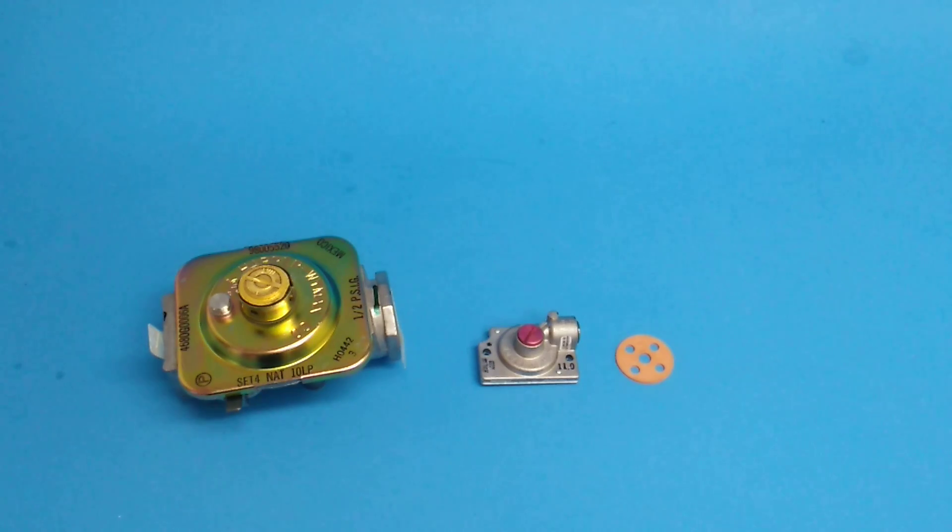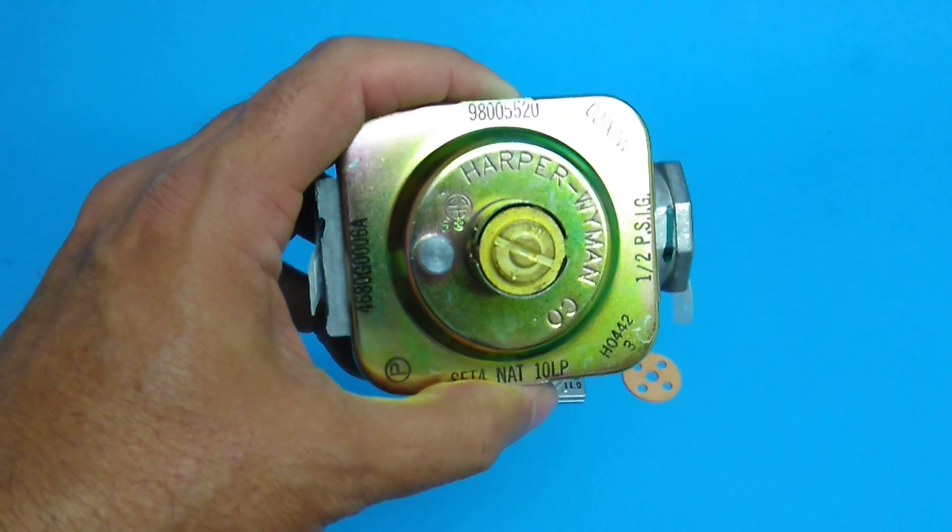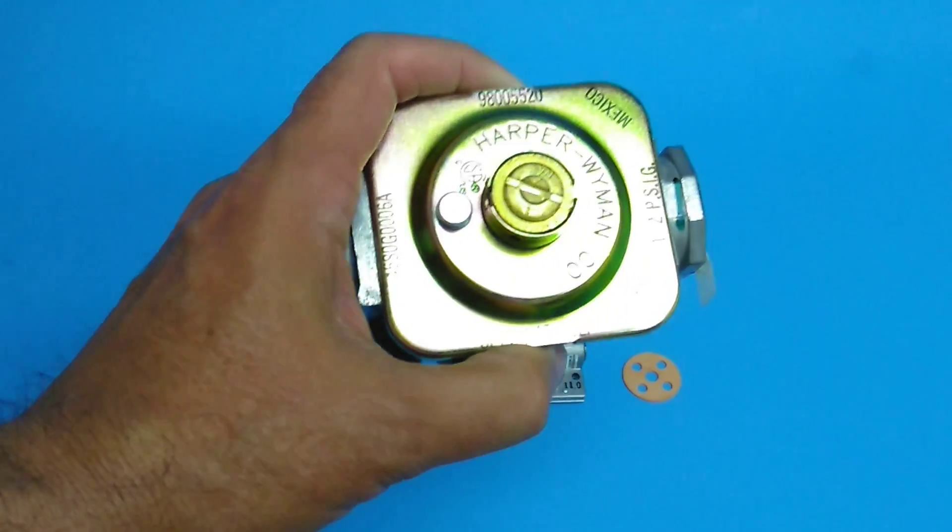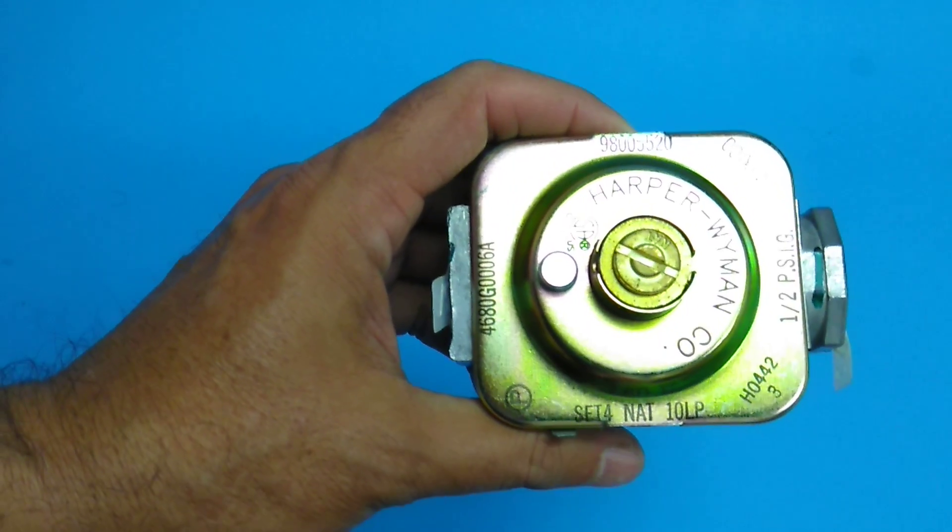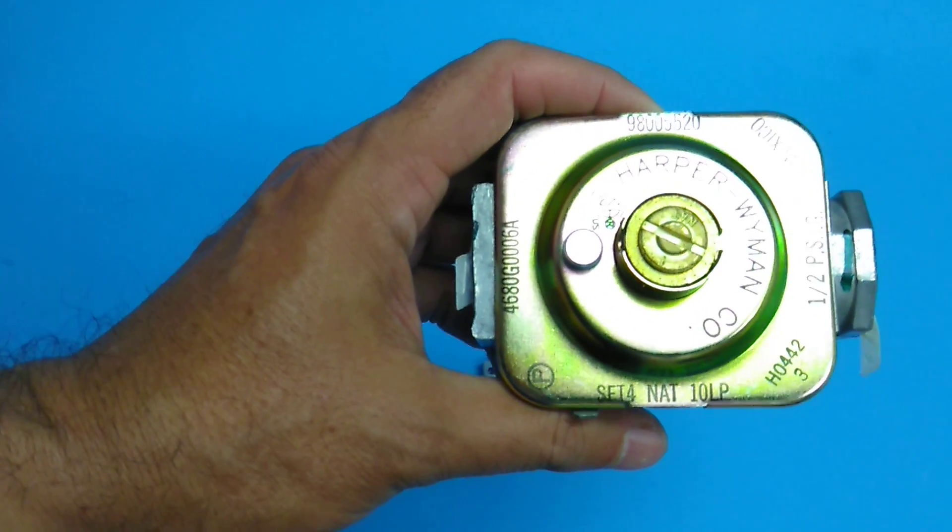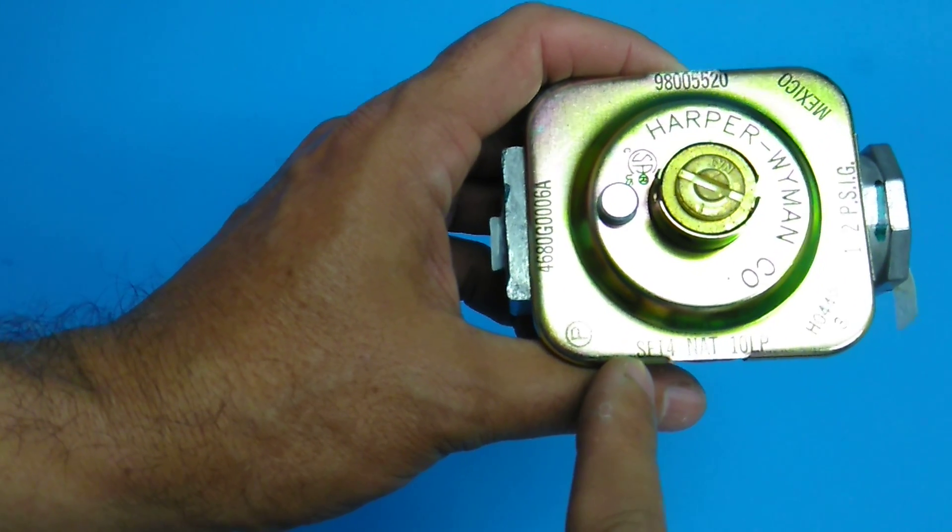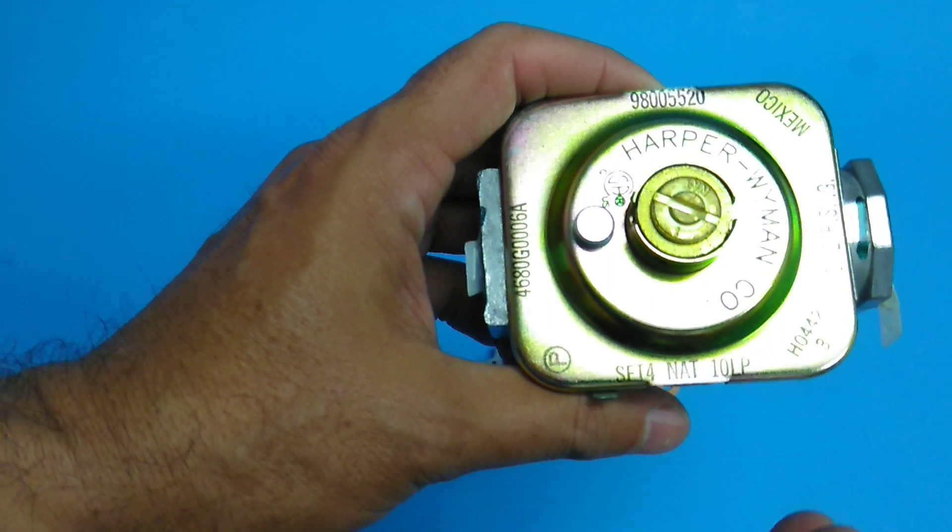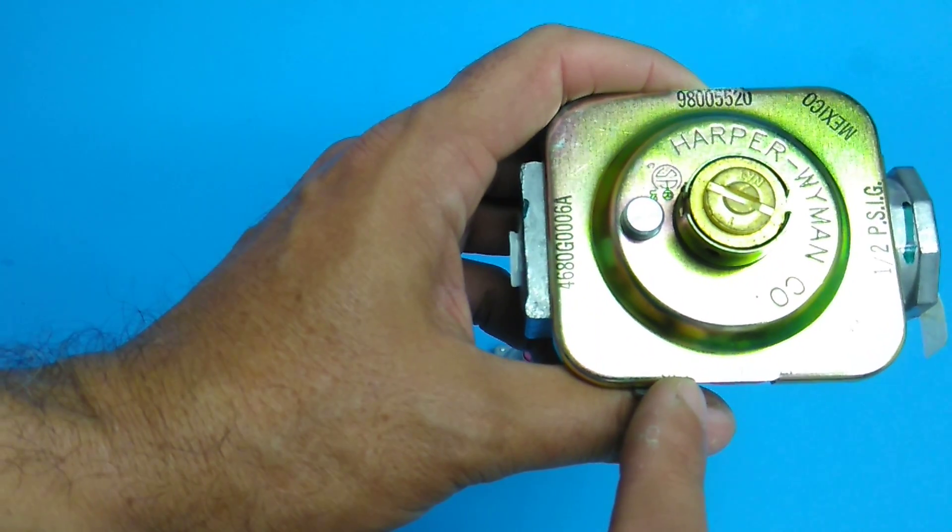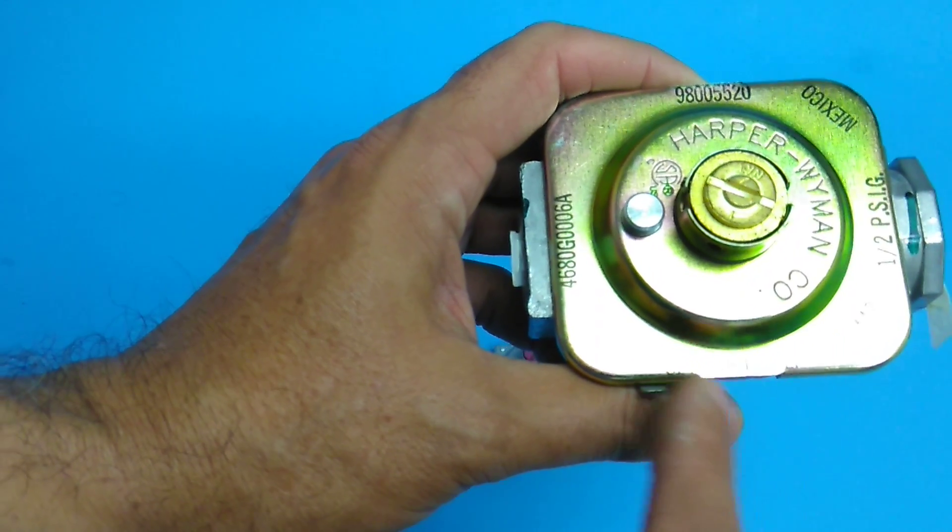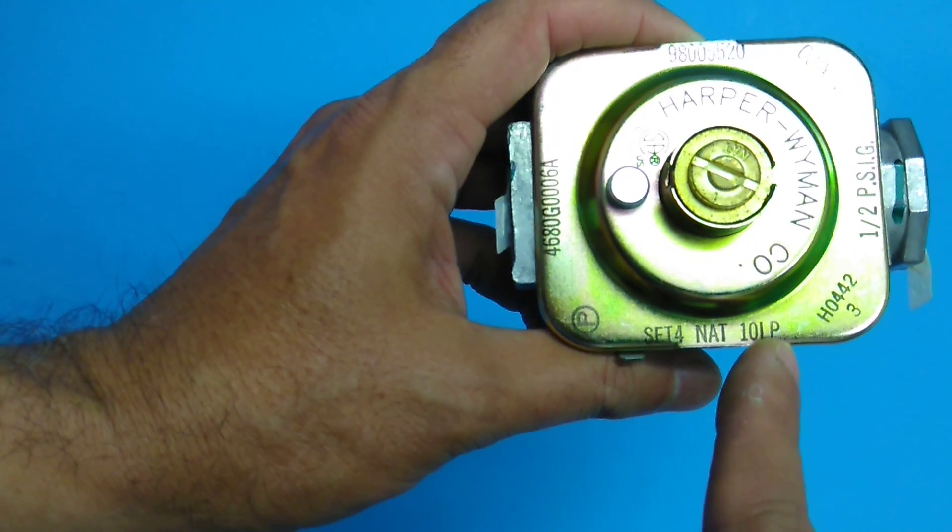So I'm going to move that aside. The next two regulators, the most common type is a Harper-Wyman. Harper-Wyman is another type of adjustable regulator that can be adjusted from natural gas to propane. So this does have an adjustment on it. It's stamped on top what the native for each different setting is. It says four, four NAT, 10 LP. That means four inches of natural gas. Four NAT. And 10 LP, 10 inches of water column for liquid propane.